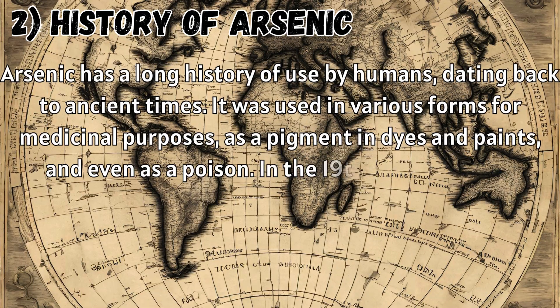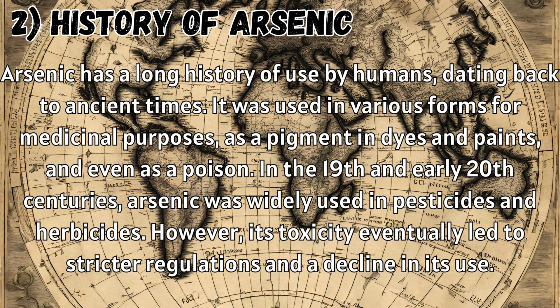Arsenic has a long history of use by humans, dating back to ancient times. It was used in various forms for medicinal purposes, as a pigment in dyes and paints, and even as a poison. In the 19th and early 20th centuries, arsenic was widely used in pesticides and herbicides. However, its toxicity eventually led to stricter regulations and a decline in its use.